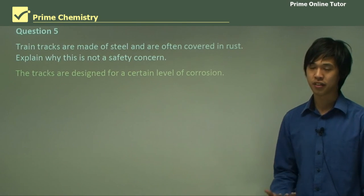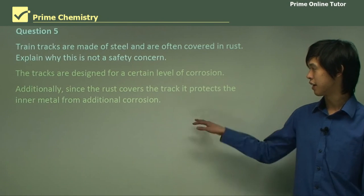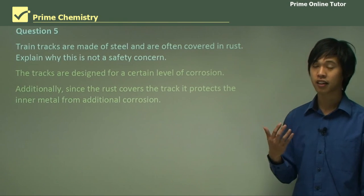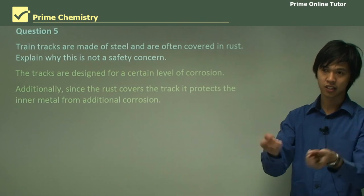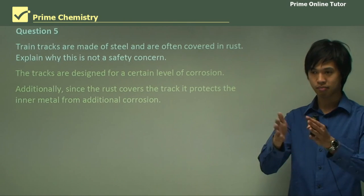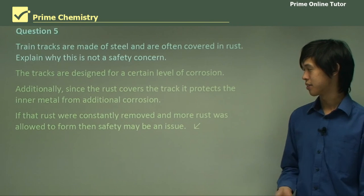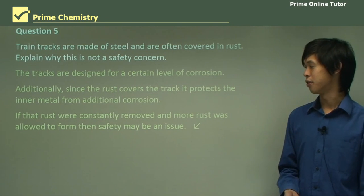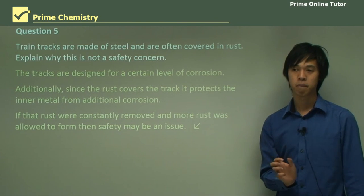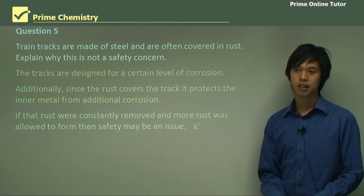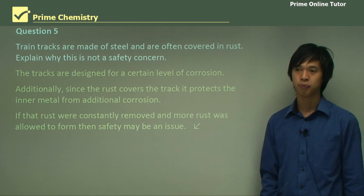The tracks are designed for a certain level of corrosion. Since the rust covers the track, it also protects that track from additional corrosion. It's on the outside, so the oxygen can't continue to attack it because it's just being stopped by this outside rust. If the rust were constantly removed and more rust was allowed to form, then that might be an issue for safety because then your metal would slowly get smaller and smaller. So it's not a big concern. But that's why they have to sometimes replace tracks, because the top layer is constantly being worn away.